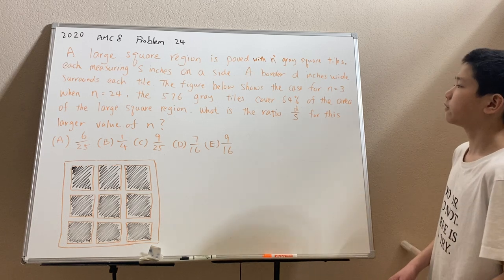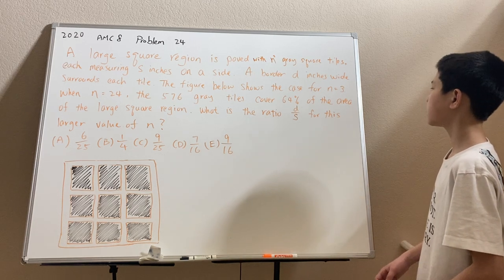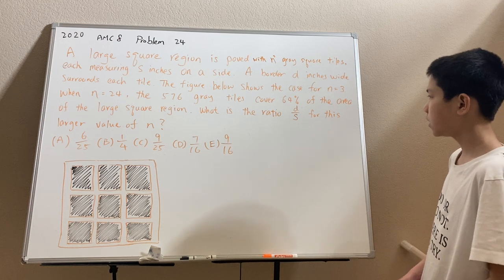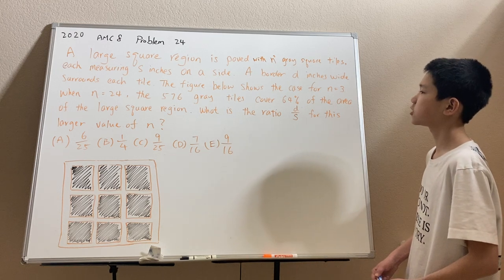The figure below shows the case for n equals 3. Now when n equals 24, the 576 gray tiles cover 64% of the area of the large square region. What is the ratio of d over s for this larger value of n?